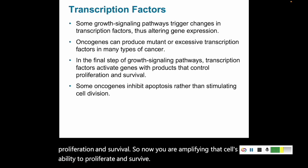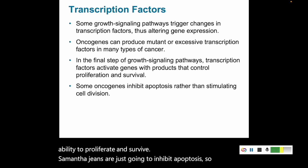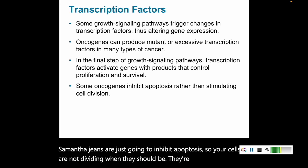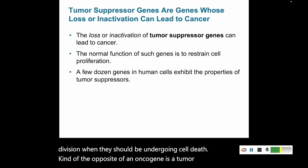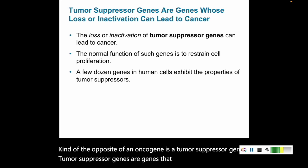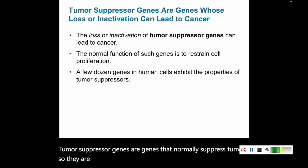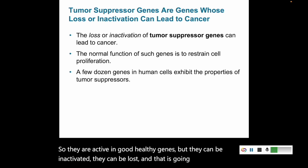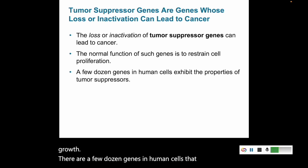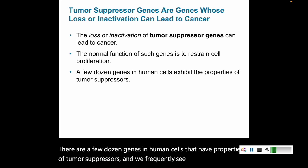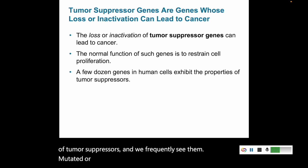Some oncogenes simply inhibit apoptosis, so your cells are not undergoing cell death when they should — instead they're stimulating cell division. The opposite of an oncogene is a tumor suppressor gene. Tumor suppressor genes are genes that normally suppress tumors — they are active, healthy genes that can be inactivated or lost, leading to cancer. Tumor suppressor genes normally slow down cell growth, and there are a few dozen such genes in human cells that we frequently see mutated or inactivated in tumors.